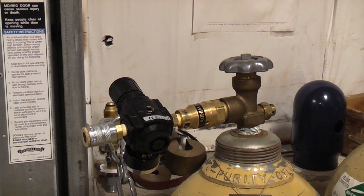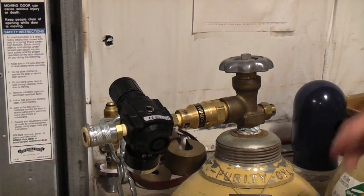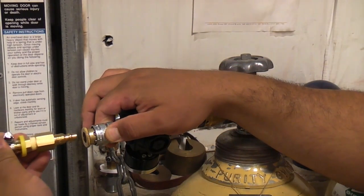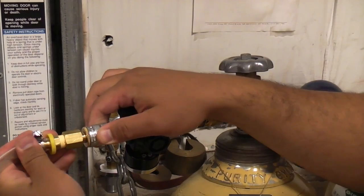Then connect the input hose to the output of the regulator assembly. Again, pull back on the metal sleeve, insert, and release.